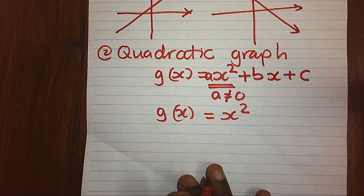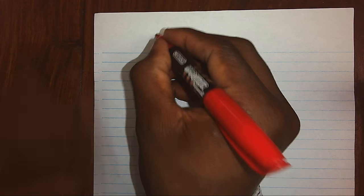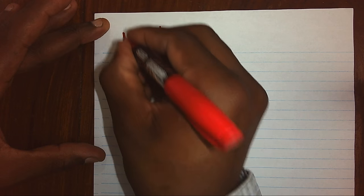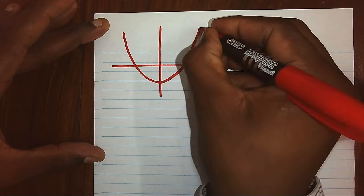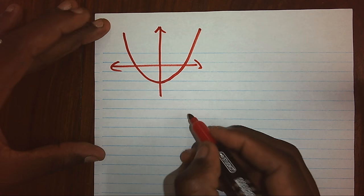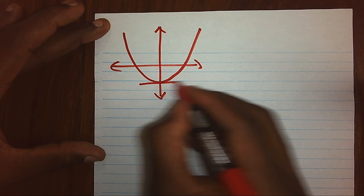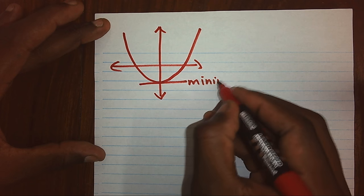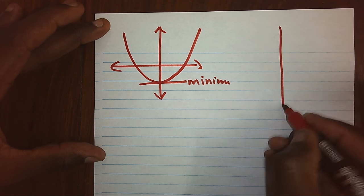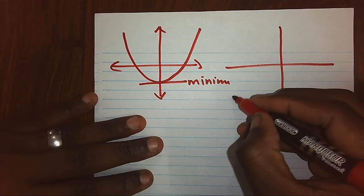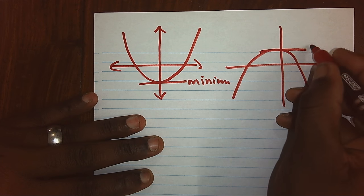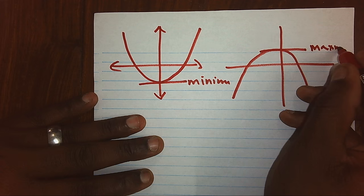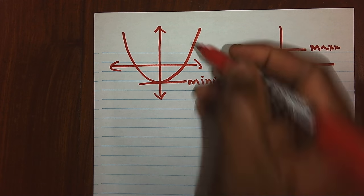How does a quadratic graph look like? Sometimes it can be facing up. Whenever a quadratic graph faces up, it gives us a minimum point. But whenever the quadratic graph faces down, it gives us a maximum point. So this is what we call our parabola.